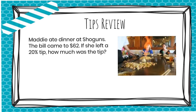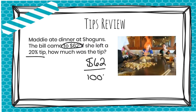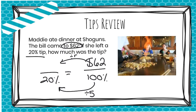Tips review: Maddie ate dinner at Show Guns. The bill came to $62. If she left a 20 percent tip, how much was the tip? Our $62 is the 100 percent, and we are trying to go down to 20 percent. To get from 100 percent to 20 percent, we divide by 5, so $62 divided by 5 gives 12.4. As we talked about before, 12.4 is $12.40. You cannot place a zero in between a decimal and a number — wherever that decimal is, it has to be right beside that number. So it would be $12.40.